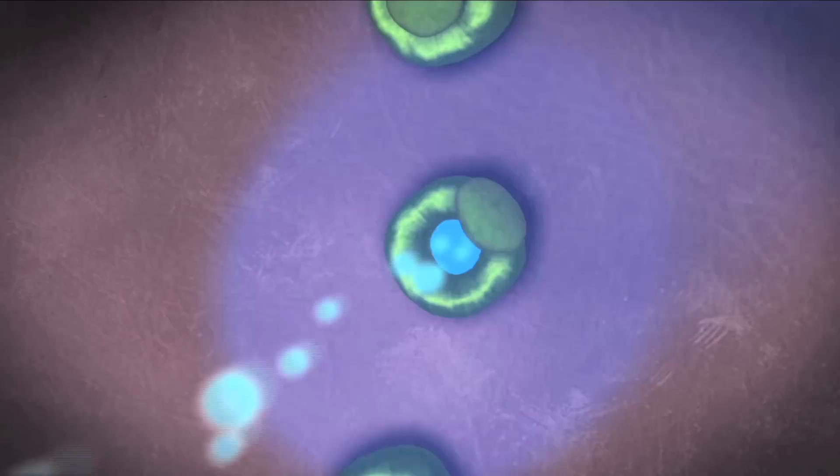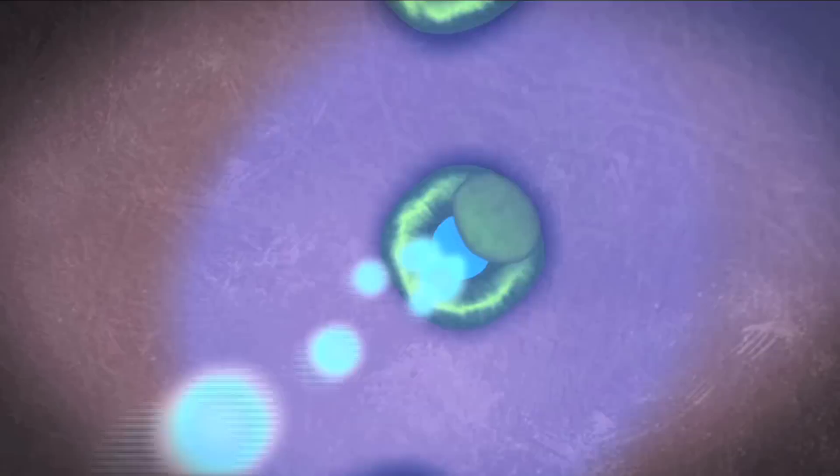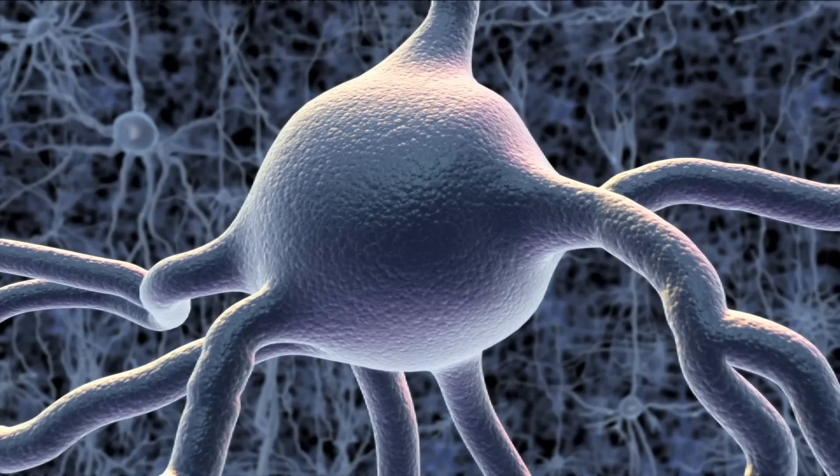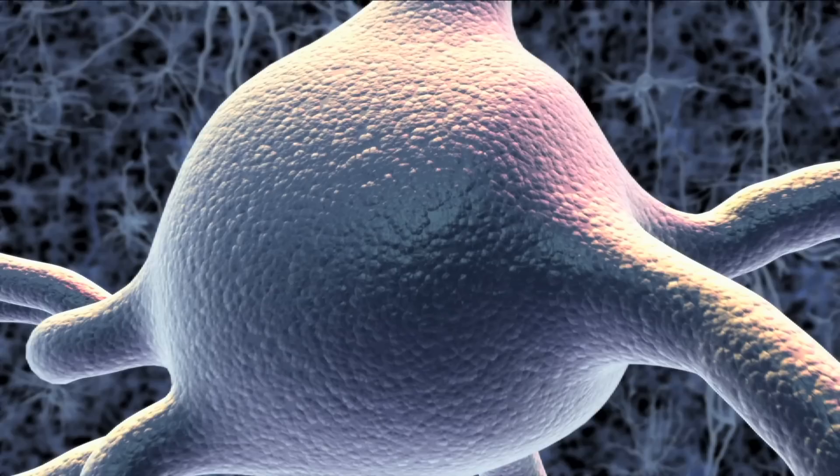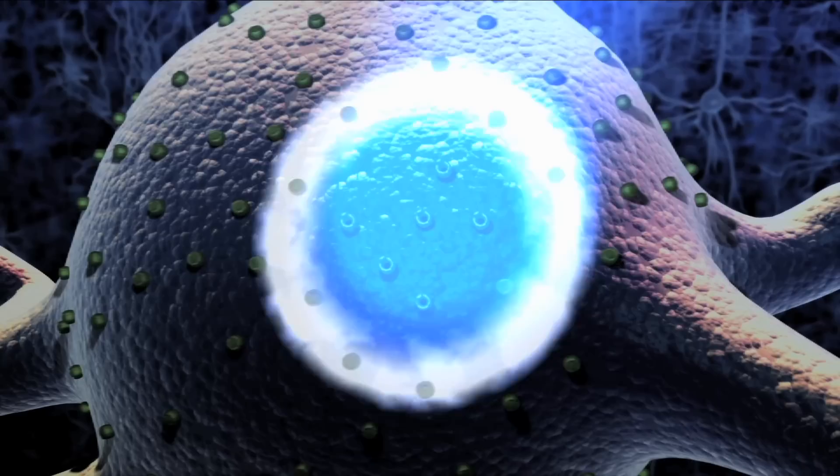But neurons are also electrical devices, and their voltage would also change if channel rhodopsin could be inserted into their membranes and then illuminated. So researchers took a piece of DNA that encodes for the channel rhodopsin protein, then they put it into neurons using a safe and effective method for delivering a gene, the same kind being used in human gene therapy trials. The neurons expressed the DNA, manufacturing copies of the channel rhodopsin protein and installing them in their membranes.